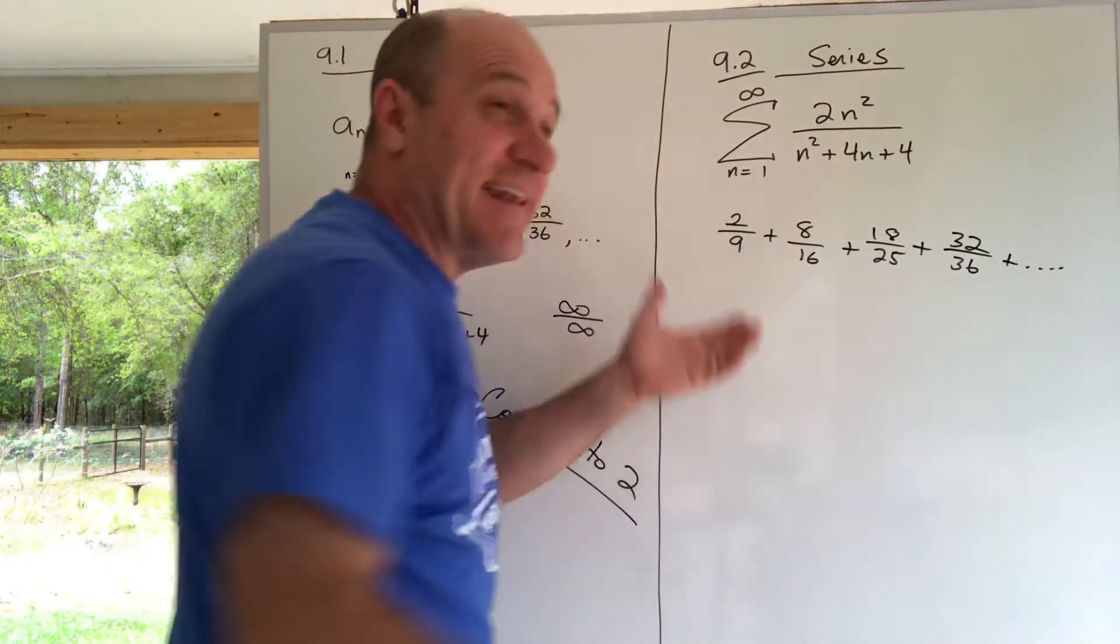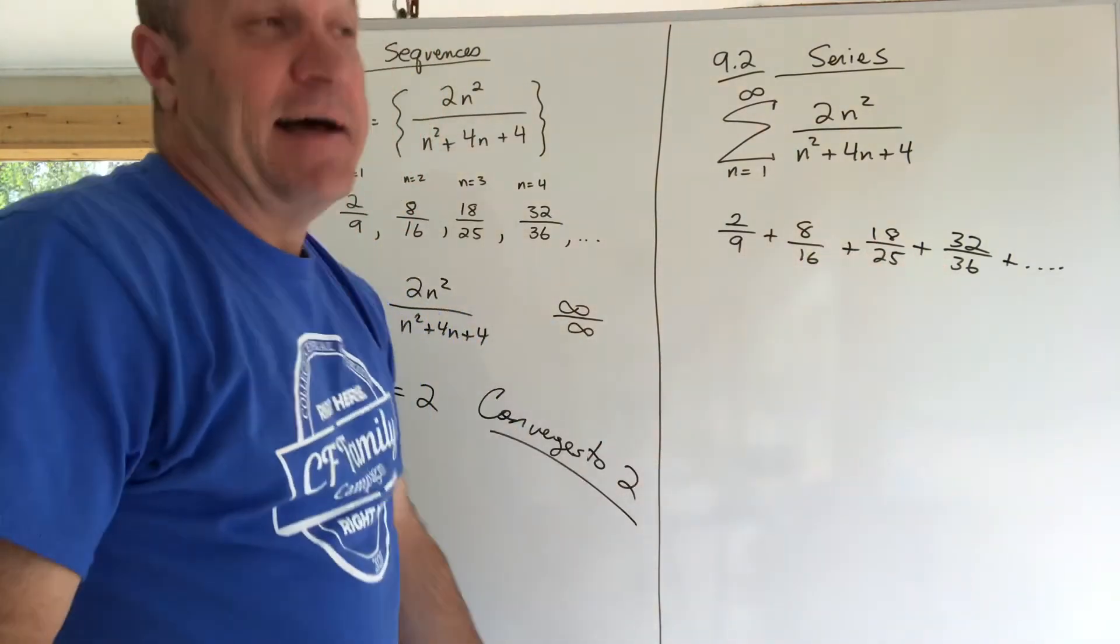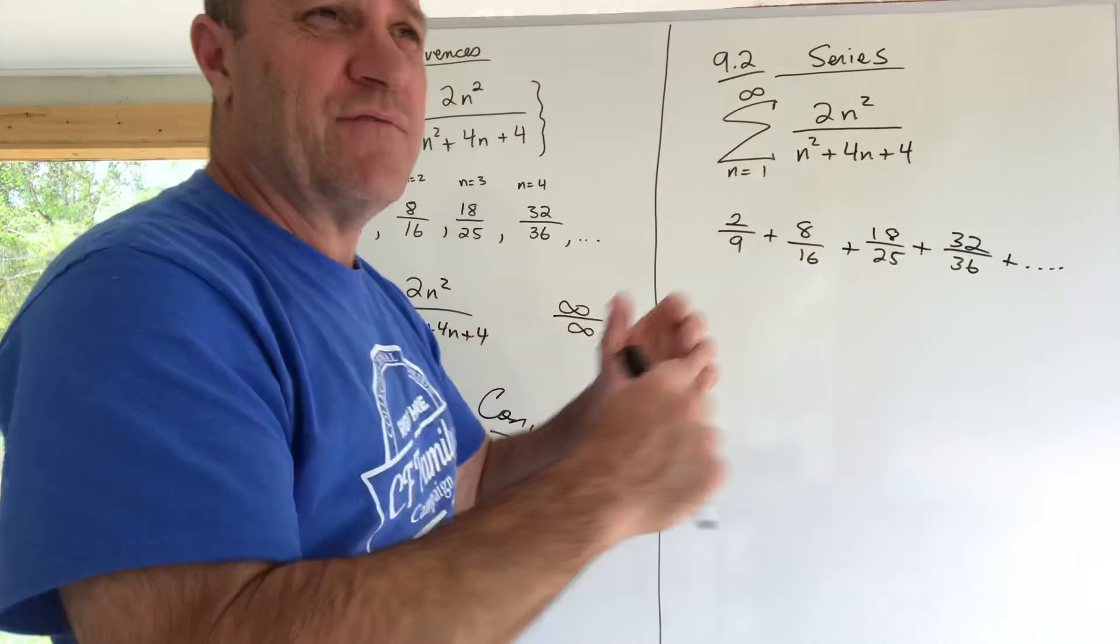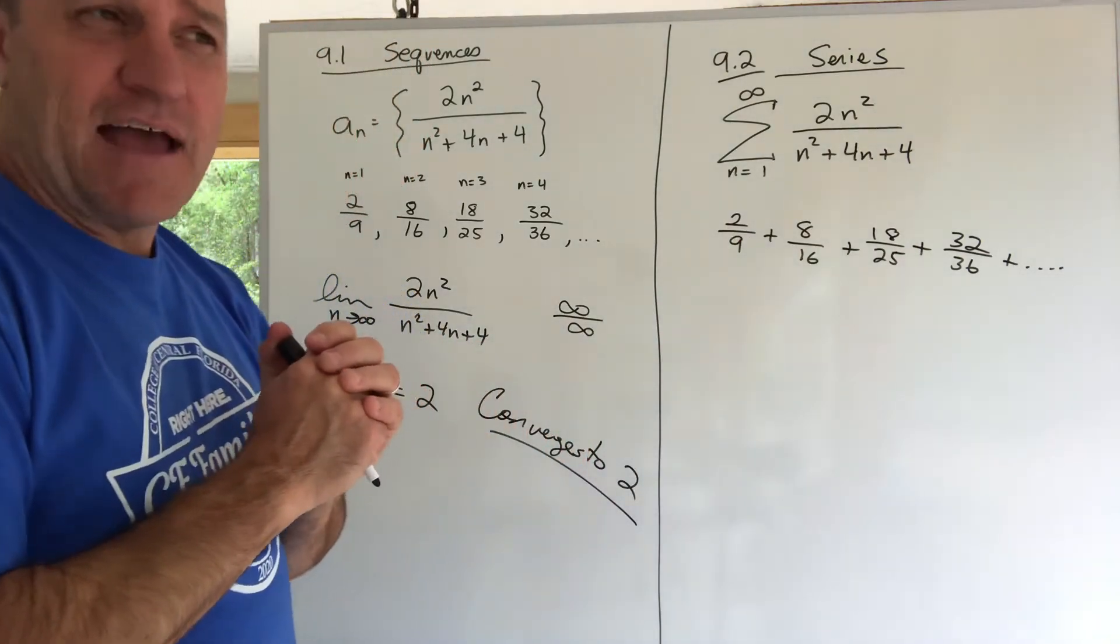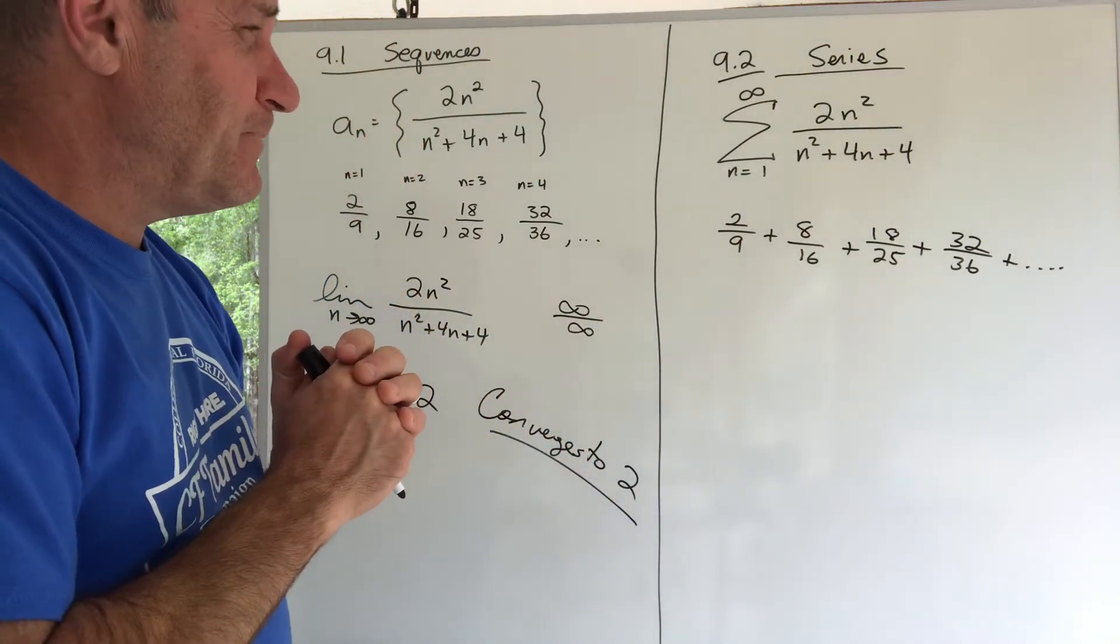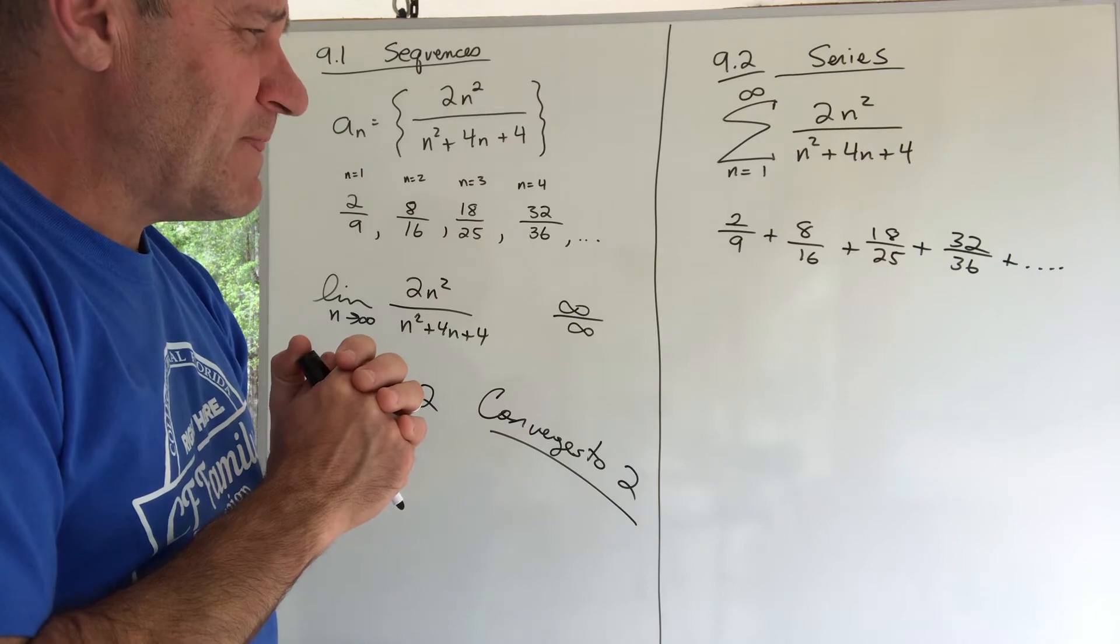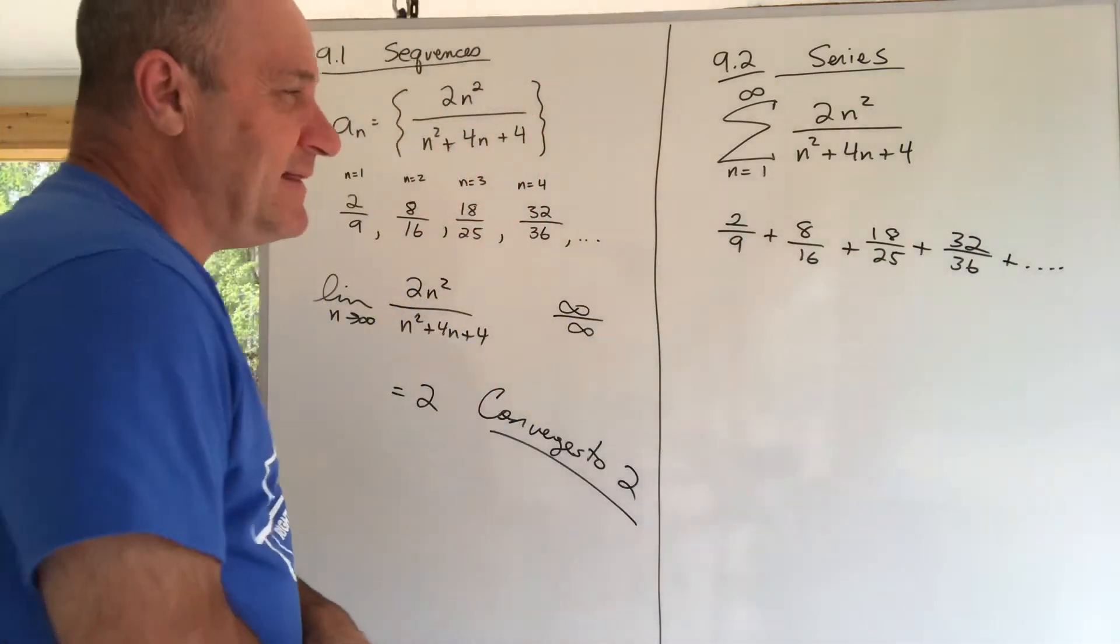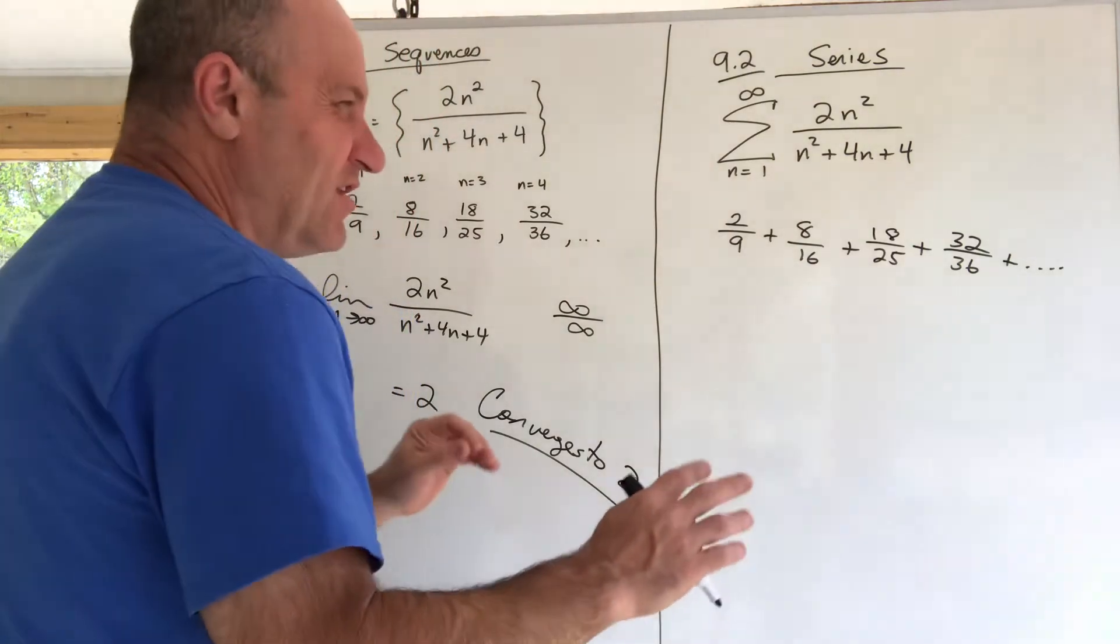If they can add up to a number, we say the series converges. If it adds up to infinity, it diverges. So what does this add up to? Well, we're going to learn this.